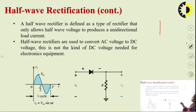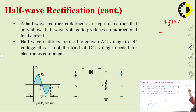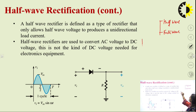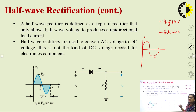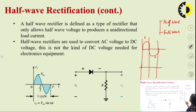A rectifier is of two types: the first is the half wave rectifier and the second is the full wave rectifier. The half wave rectifier converts only one of the cycles of the input signal — either it will convert only the positive cycle or it will convert only the negative cycle.